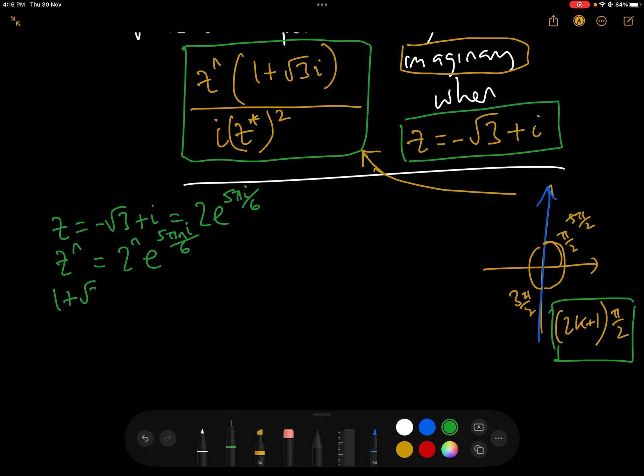And looking at 1 plus root 3 i, these are well-known complex numbers, and it should be fairly easy to convert them to exponential form. 1 plus root 3 i is 2e to the pi i over 3.